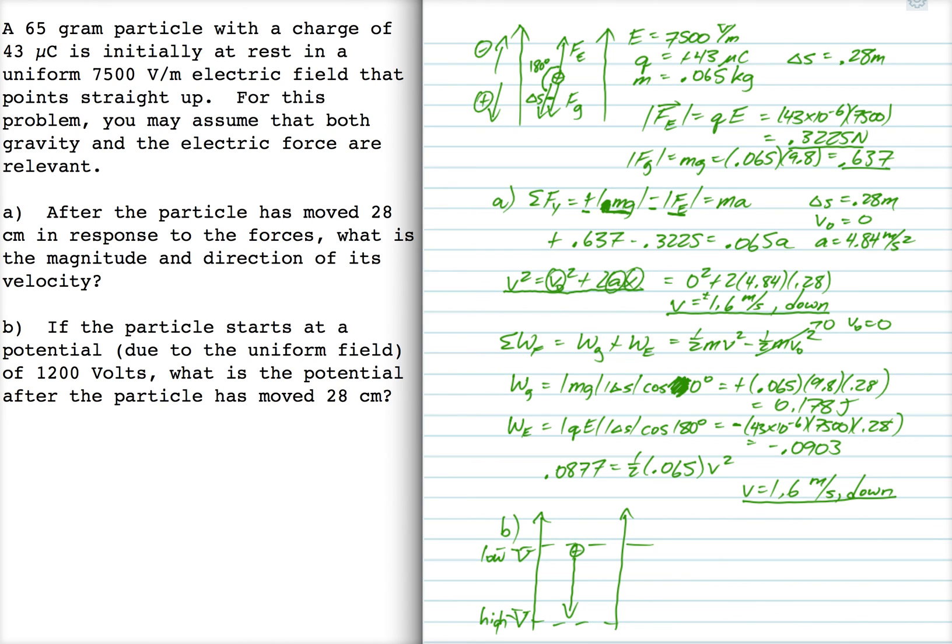So this thing is going to move to a higher potential. Now we're being told here that the initial potential is 1200 volts. So the final potential is going to be bigger than that, right? Now we have the equation for a uniform field that the change in voltage is ED. So that's 2100 volts.